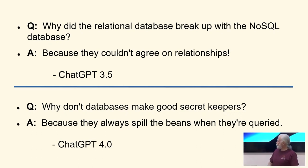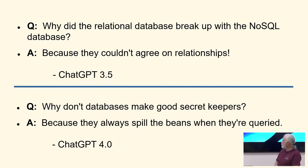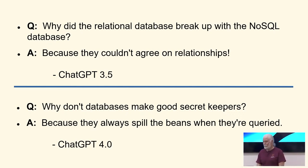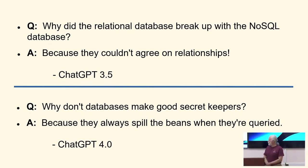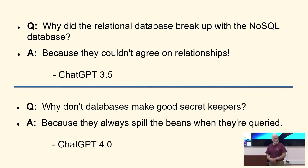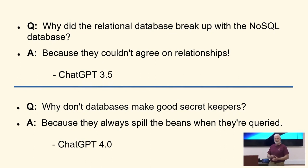The first joke I find actually a little bit cute and funny: Why did the relational database break up with the NoSQL database? Because they couldn't agree about relationships. The second one has no humor at all, which means either AI is regressing — which is entirely possible — or as it progresses, our AI overlord has no sense of humor at all, which is a little scarier.